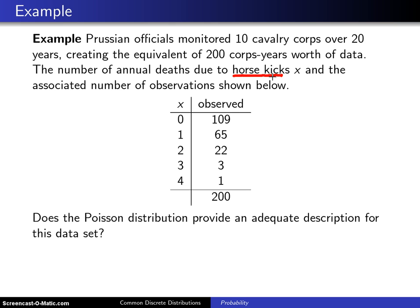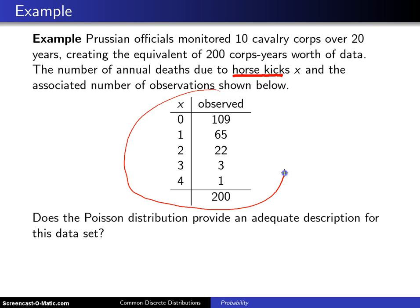Prussian officials monitored 10 cavalry corps over 220 years, creating the equivalent of 200 corps-years worth of data. The number of annual deaths due to horse kicks, X, and the associated number of observations is given in the table below. This table encapsulates the 200 data values.